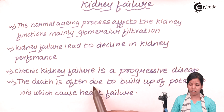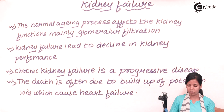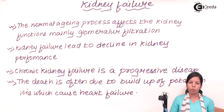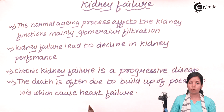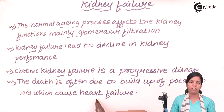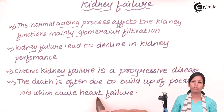The death in kidney failure is most often due to the build-up of potassium ions in your system, which the kidney can no longer regulate once it has failed. This may eventually lead to heart failure, cardiac arrest, or stroke, and eventually a person may die or suffer multiple organ failure.